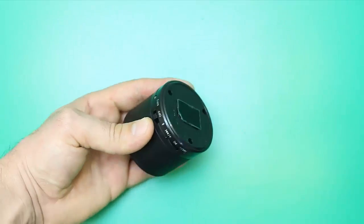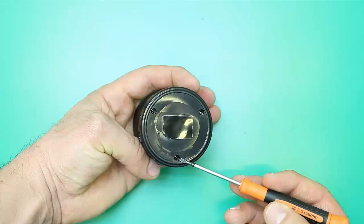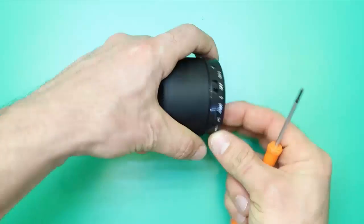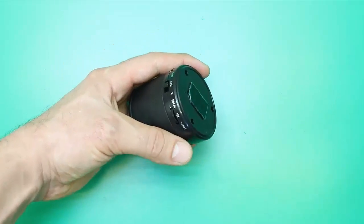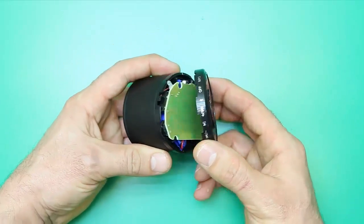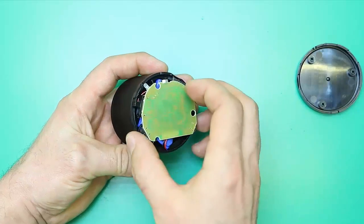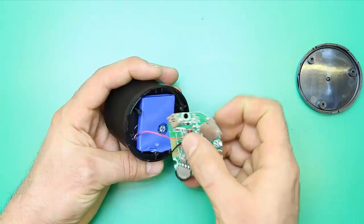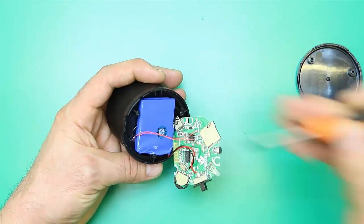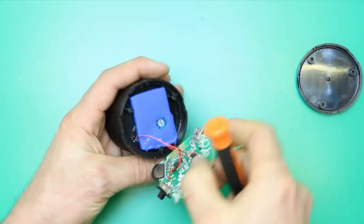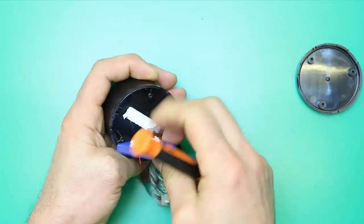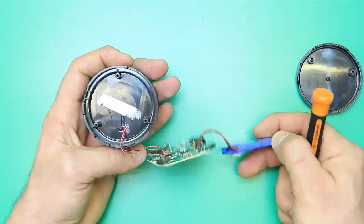We remove the rubber protection, and under it we find three clamping screws. Here we find the speaker module and battery that are between 2.5 and 4.2 volts depending on the charging state.